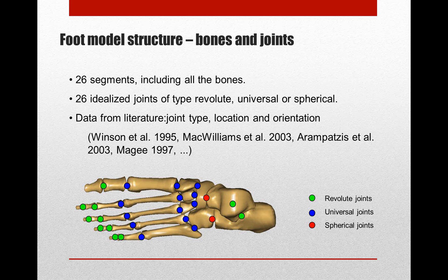Based on the CT scans, using all the bones of the subjects, we set up a model where all bones were connected with joints. We had three different kinds of joints: revolute joints, universal joints, and spherical joints — shown in three different colors. Revolute joints have one degree of freedom, universal joints two, and spherical joints three degrees of freedom. All this data is based on literature data and findings from other studies.